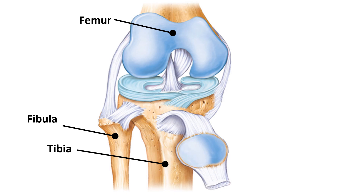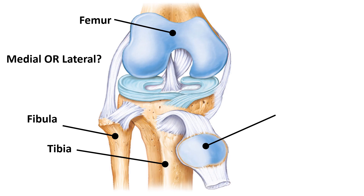Remember, the fibula is the bone that is lateral on the lower leg, the tibia is medial. This little circular structure here is the patella, or the kneecap. It usually covers this area right here, but in most pictures the patella is removed so that you can see the structures that are deep to it.